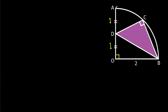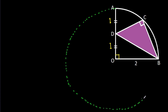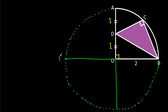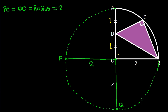Now, if we complete the circle and extend AO and BO, suppose this point is P and this point is Q. Then PO equals QO, which is the radius, that is 2. So PO equals 2 and QO equals 2.